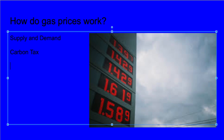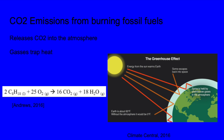But how do gas prices work? It is basically supply and demand. If an oil refinery shuts down, there is no oil supply, which brings up gas prices. Also, back when the solar eclipse was happening, gas stations brought up their prices because they knew a lot of people were going to fill up to drive south. There is also a carbon tax that you pay when fueling up, to try and lower carbon emissions.